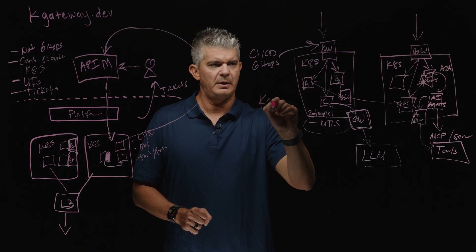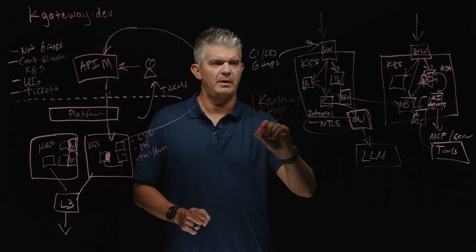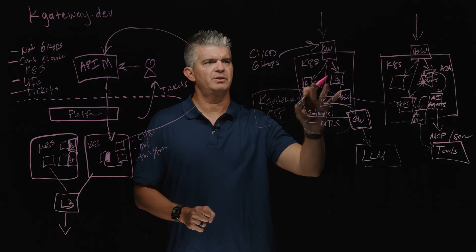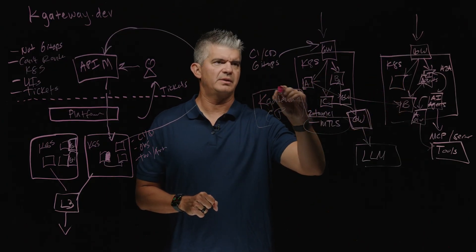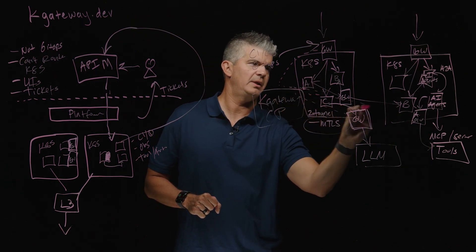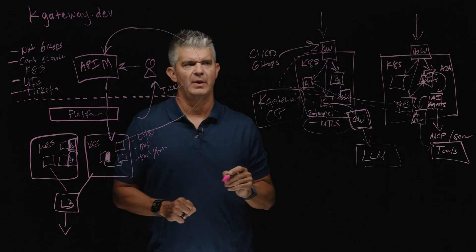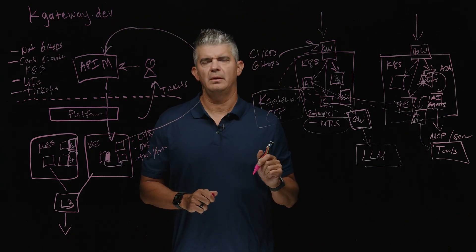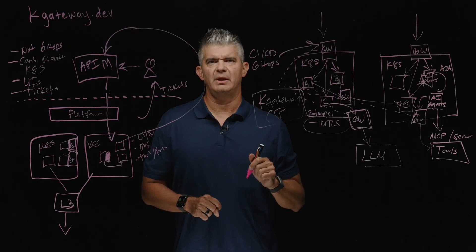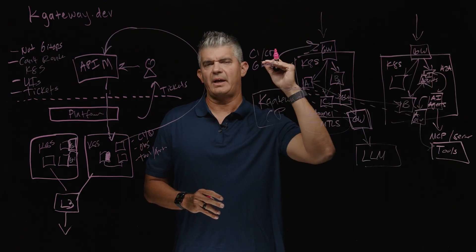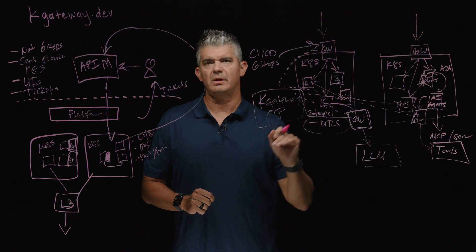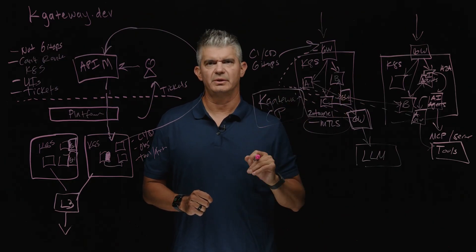The gateway control plane lives within the Kubernetes clusters and controls the various data planes. From one control plane and the K-Gateway implementations, you can get unified access, API control, and even agentic communication control from one single place.